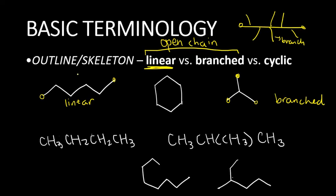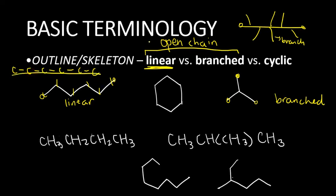If I actually draw this in the condensed formula and write the carbons, it would be like this. First, we recognize that this has one, two, three, four, five, six carbons. So if I draw that, it would be one, two, three, four, five, six — and you notice that they form a straight line. Therefore, the word linear just gives justice to that fact.